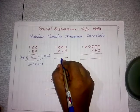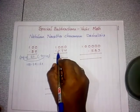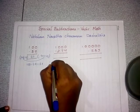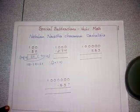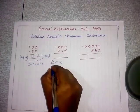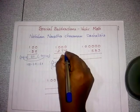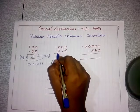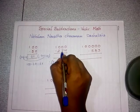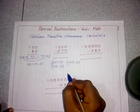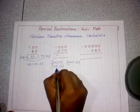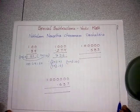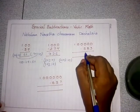Another example with the Nikhilam method: 1000 minus 274. Focus on 274 — hundreds and tens digits go to 9, units digit goes to 10. So: 2 plus 7 equals 9, 7 plus 2 equals 9, 4 plus 6 equals 10. The answer is 7, 2, 6 — giving 726.